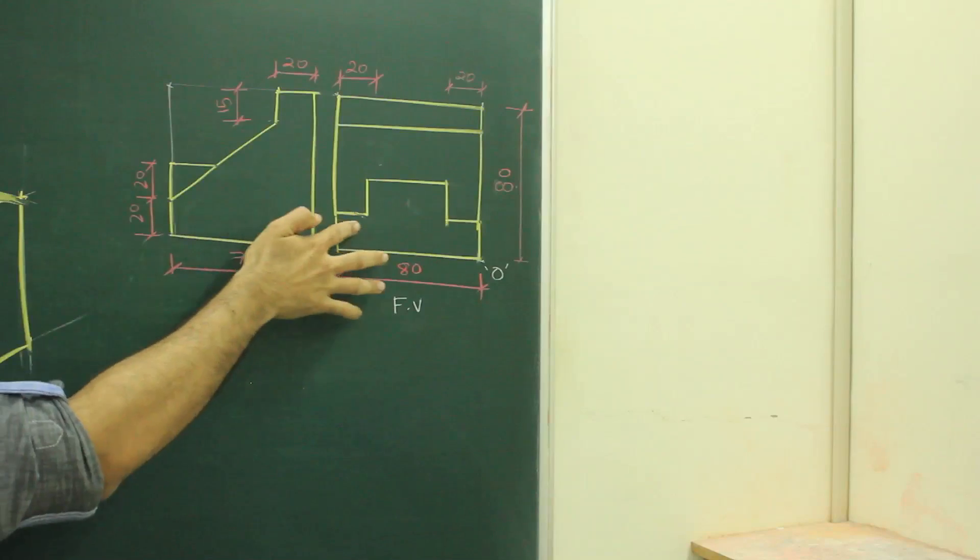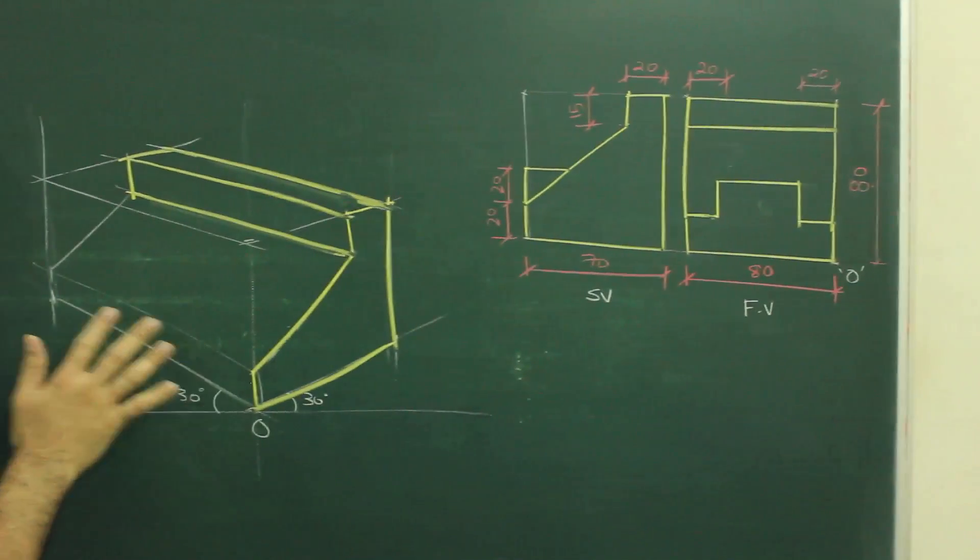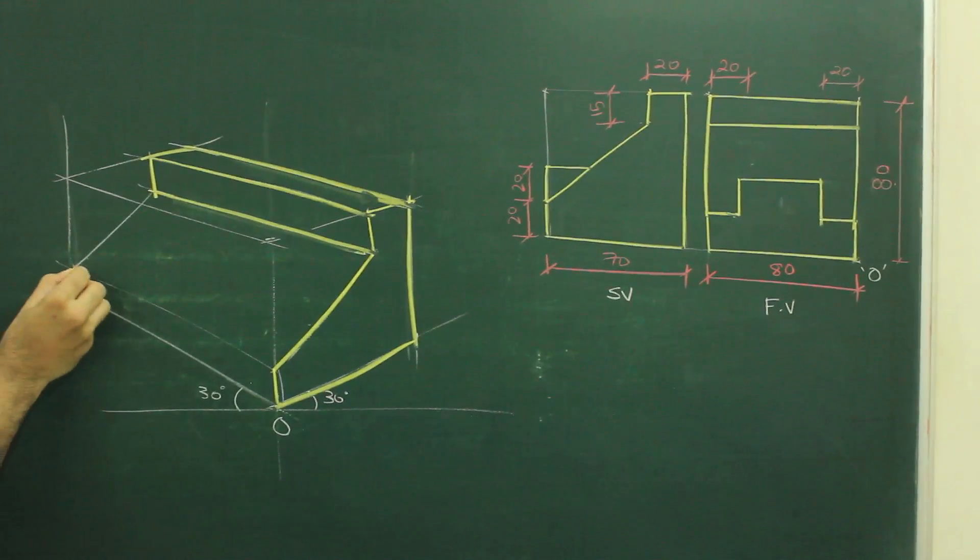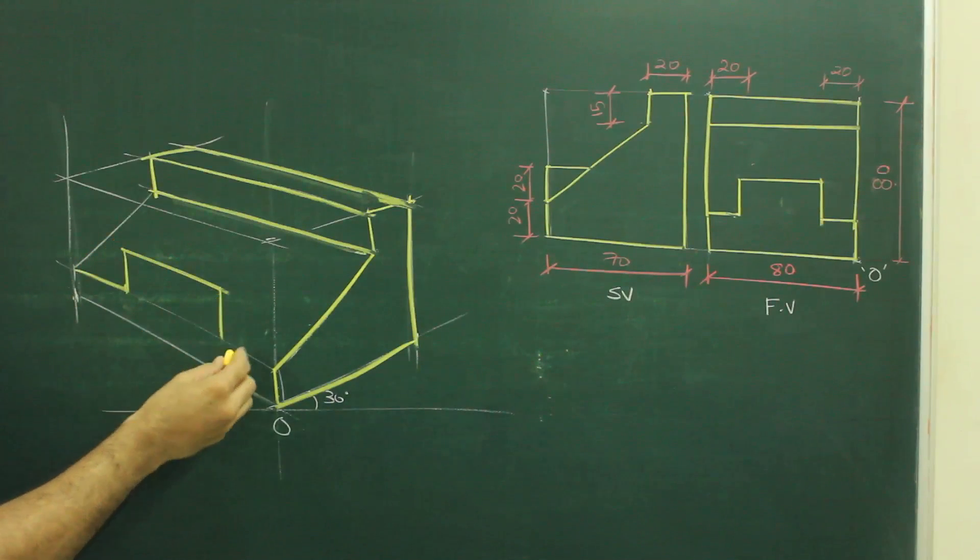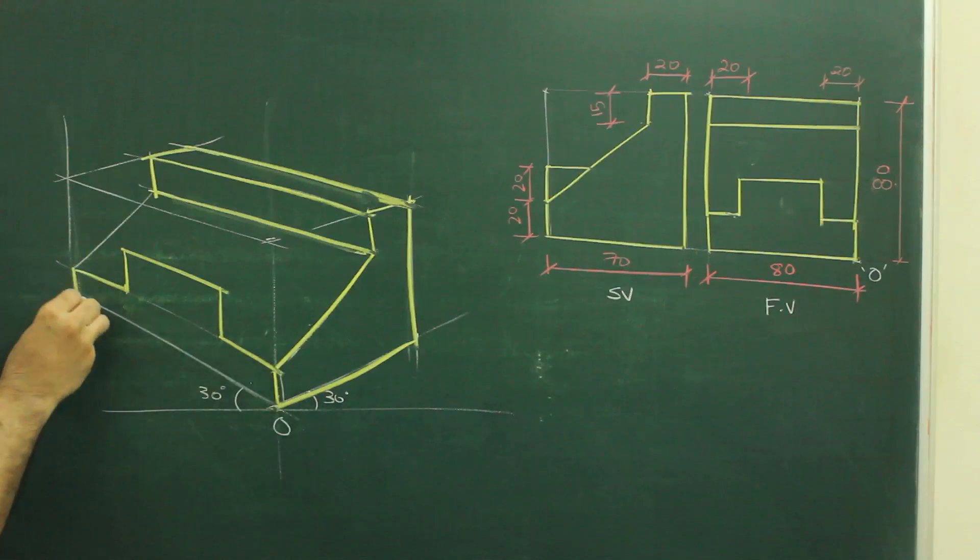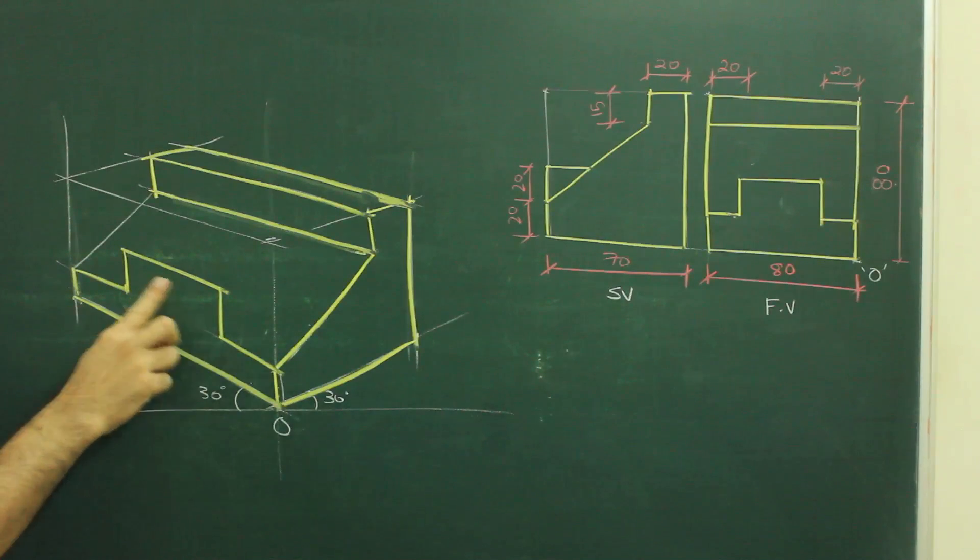So I can draw this part over here. I will take 20 from here, I will go up by 20, then again 40, down. So I got this part as well.